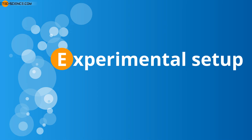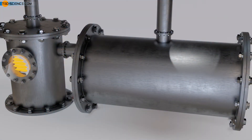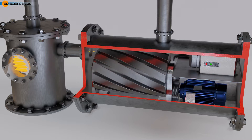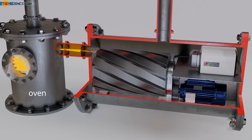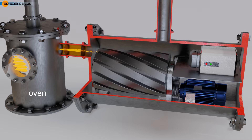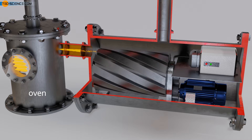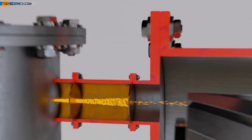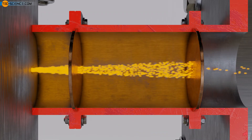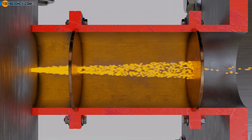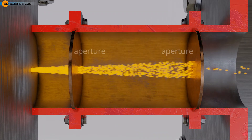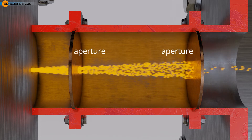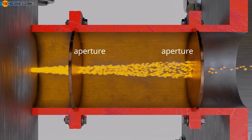To measure the speed of the molecules in a gas, the used substance is first evaporated in an effusion oven and heated to a constant temperature. The gas molecules can pass through a hole in the oven. Thereby, the gas molecules still move in different directions in a wide range. Therefore, with the help of two apertures, called a collimator, a sharply focused particle beam is then generated.